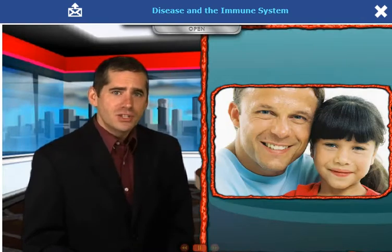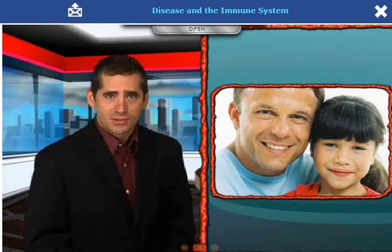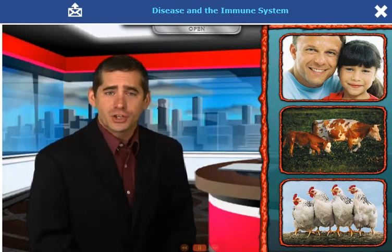In humans and other complex animals like cows and chickens, cells are organized into tissues. These tissues combine to form organs, which work together in organ systems. It's these organ systems which perform the life functions of the animal, so as you can see, organ systems are pretty important.